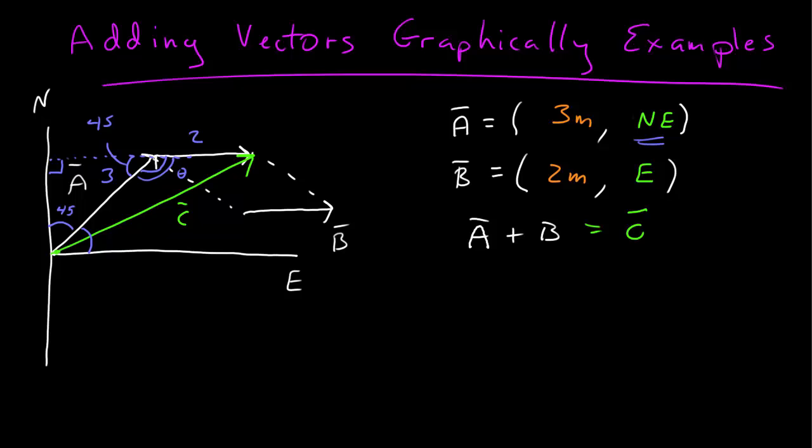Let me call that theta, and so I know theta is equal to 135 degrees. So I can now find the length of C using the law of cosines because I have two sides and the angle between them. The length of side C, which is the magnitude of the vector C, C squared, is equal to A squared plus B squared minus 2AB times cosine of the angle theta. And this is important for this formula to work, this angle is opposite this side C.